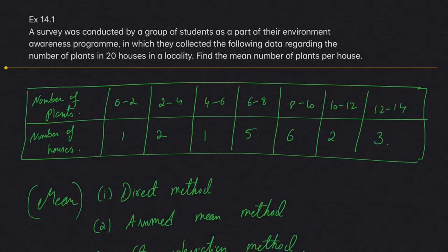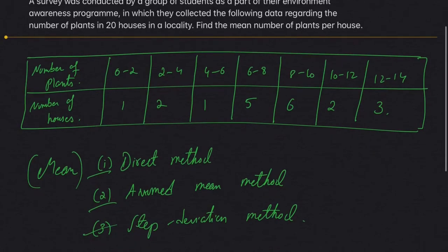There is no hard and fast rule that you have to use a particular method for each question. The question determines which method you should use. Now for this problem about the number of plants in houses, I will use the first method, the direct method.